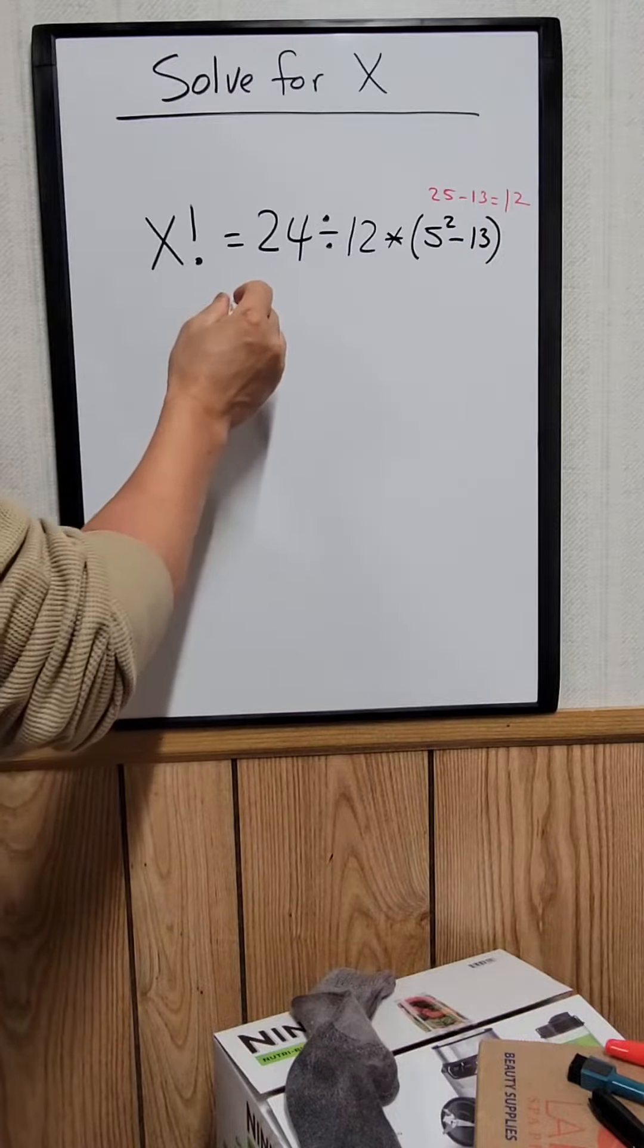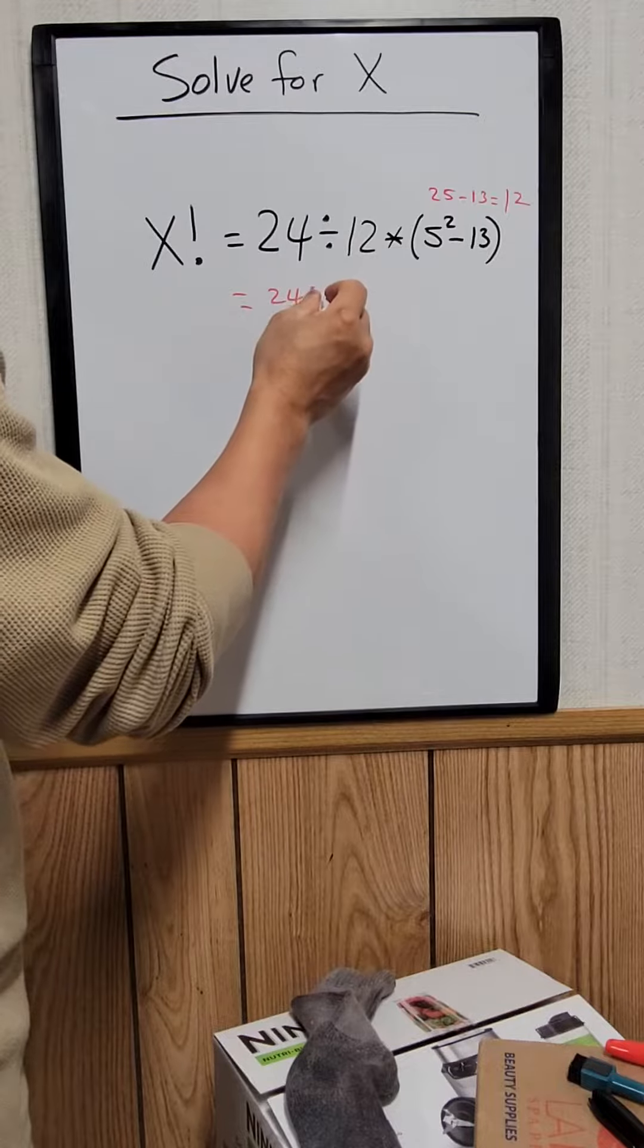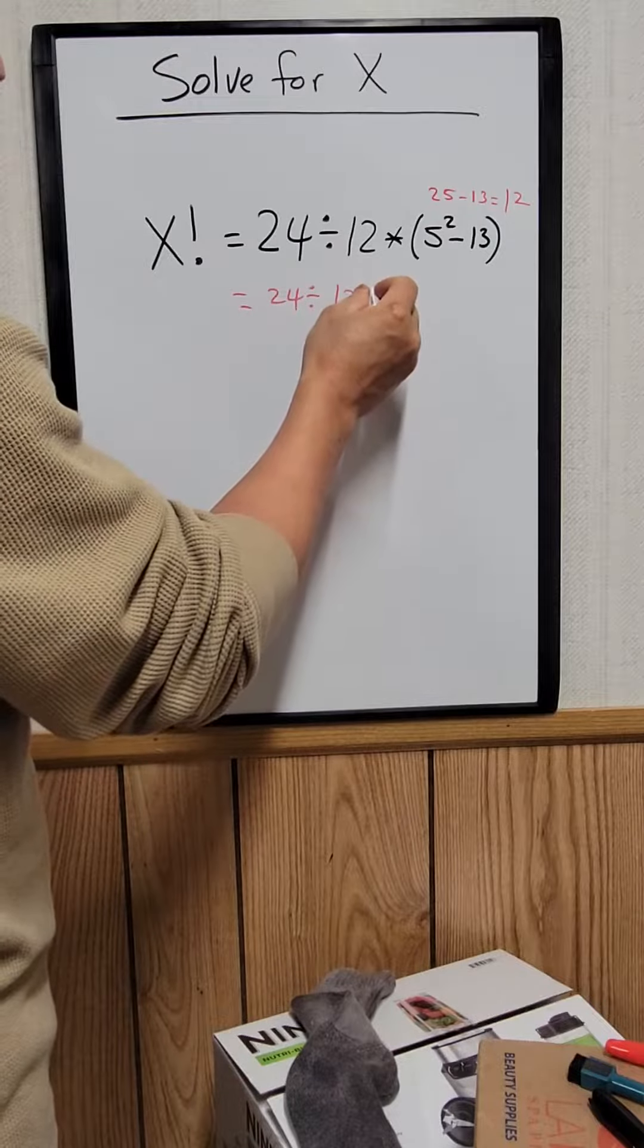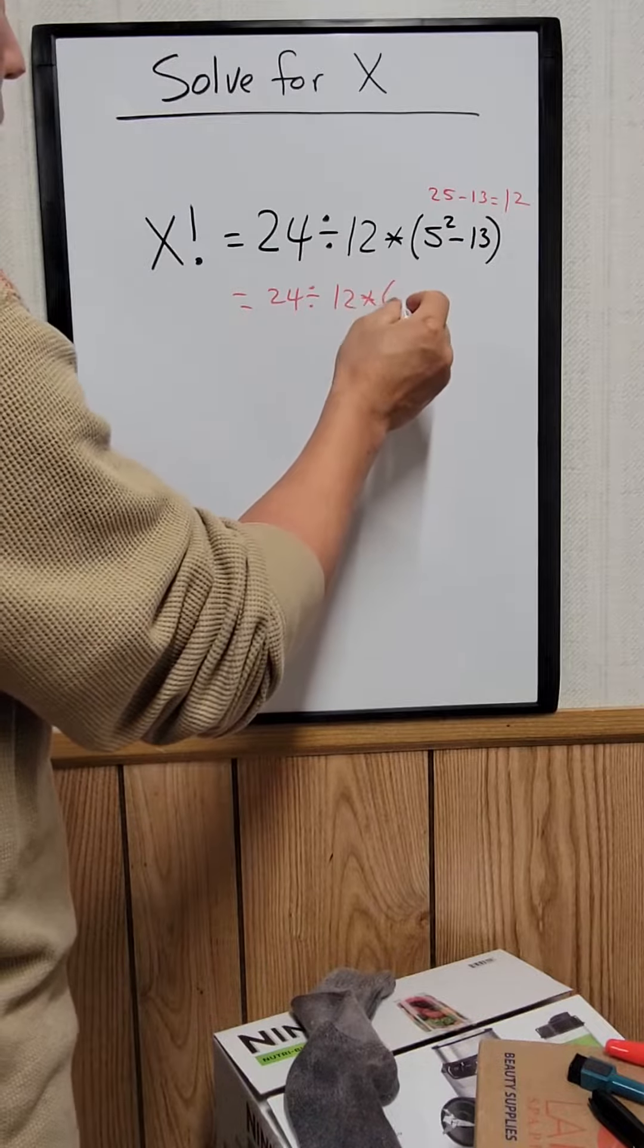Okay, now we can rewrite it. 24 divided by 12 times 12.